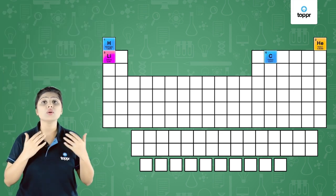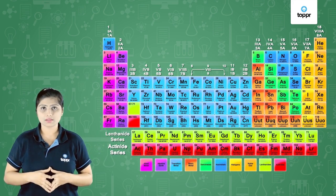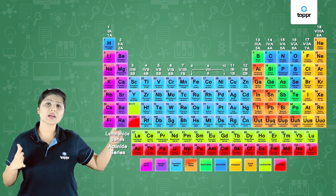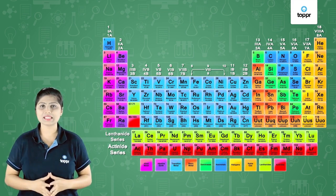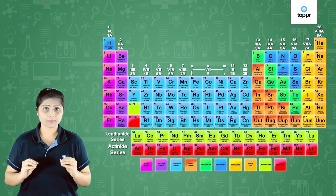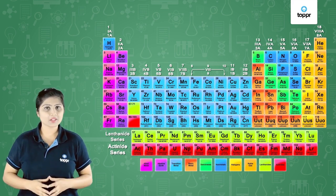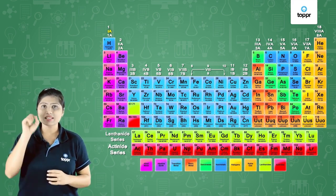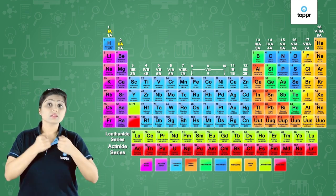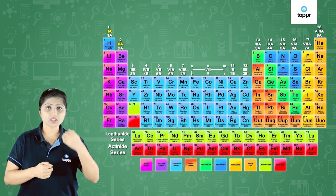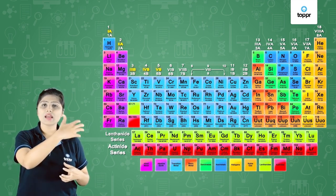Similarly, we can place all other elements in their positions. When we talk about the 18 groups, they are numbered 1, 2, 3, 4, 5, 6, 7 and so on till 18. But there is one more way of numbering these groups — the IUPAC way. The first column has elements with 1 valence electron, so it is numbered as Roman numeral I. The second group is numbered as Roman numeral II. Groups 3 to 12 are the transition metals, numbered 3, 4, 5, 6 and so on.